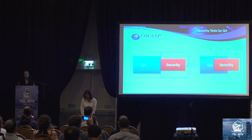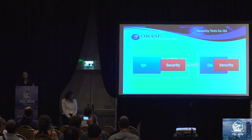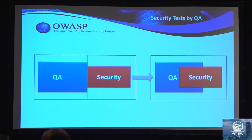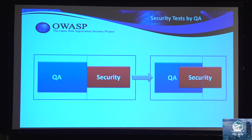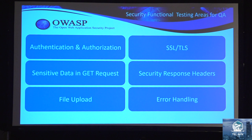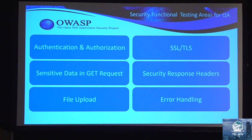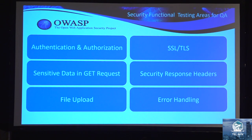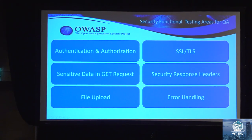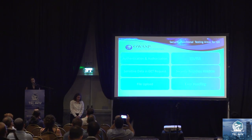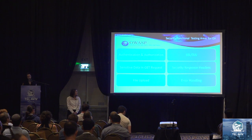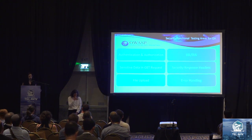Right now, the QA team is already performing some security testing but they are not aware that this testing is also relevant for security, and because of that, the application security team is not aware that this test is already done. We want to increase the security coverage for the QA team and give visibility to the application security team. This is the list of security testing areas for QA — for example, authentication and authorization such as session handling, weak passwords, direct access, sending sensitive data in GET requests, uploading huge files or files containing malicious code, SSL and TLS version and weak ciphers, security response headers such as XSS protection, clickjacking, and error handling.